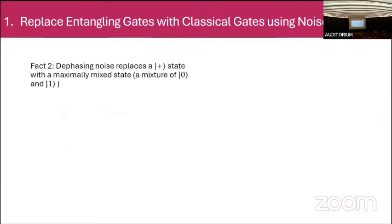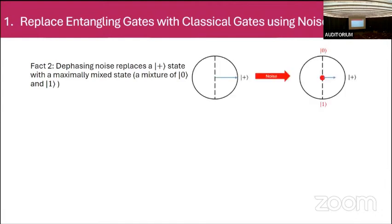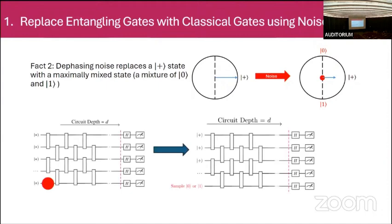The second fact is that dephasing noise acts very predictably on the plus state. The plus state is a superposition of zero and one. When you apply dephasing noise, it makes it a mixture of zero and one — in the Bloch sphere picture, what was on the boundary is now a shorter Bloch vector. Instead of simulating the shorter Bloch vector, we sample: the simulation algorithm takes the noise channel and samples either leaving the plus state intact, or an error occurs replacing it with zero or one.